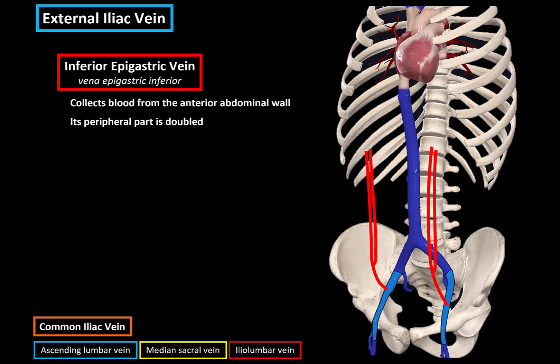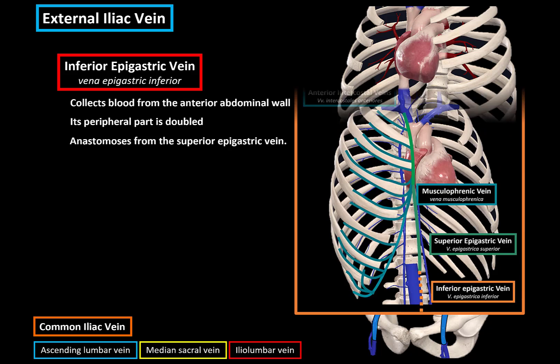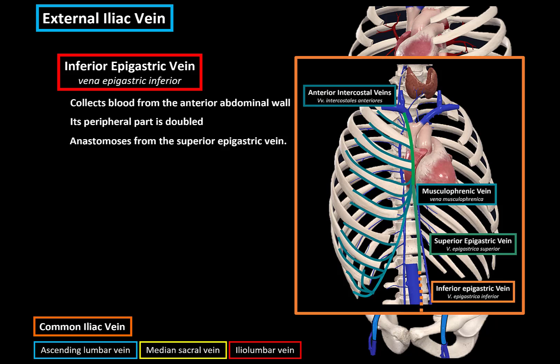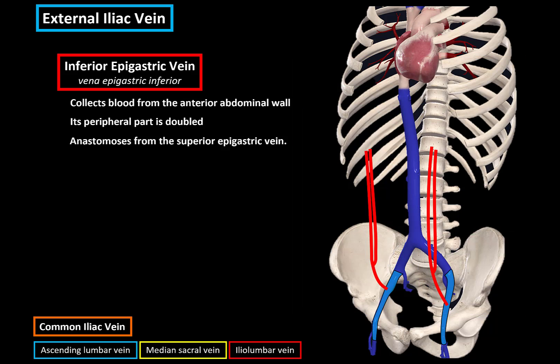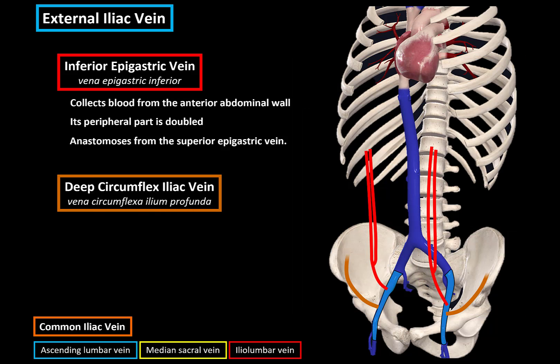Keep in mind that the inferior epigastric vein goes together with the inferior epigastric artery, and its peripheral part is doubled — usually veins are doubled. In the upper direction, it anastomoses with the superior epigastric vein of the internal thoracic vein. Then we have the deep circumflex iliac veins, which collect blood from the iliac region and the adjacent abdominal wall. Their peripheral part is doubled as well.